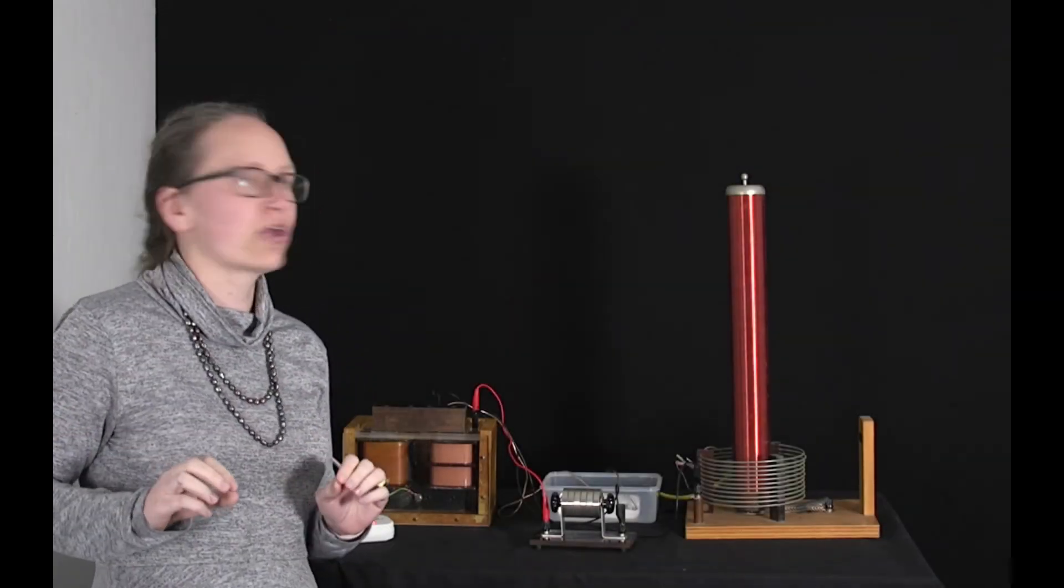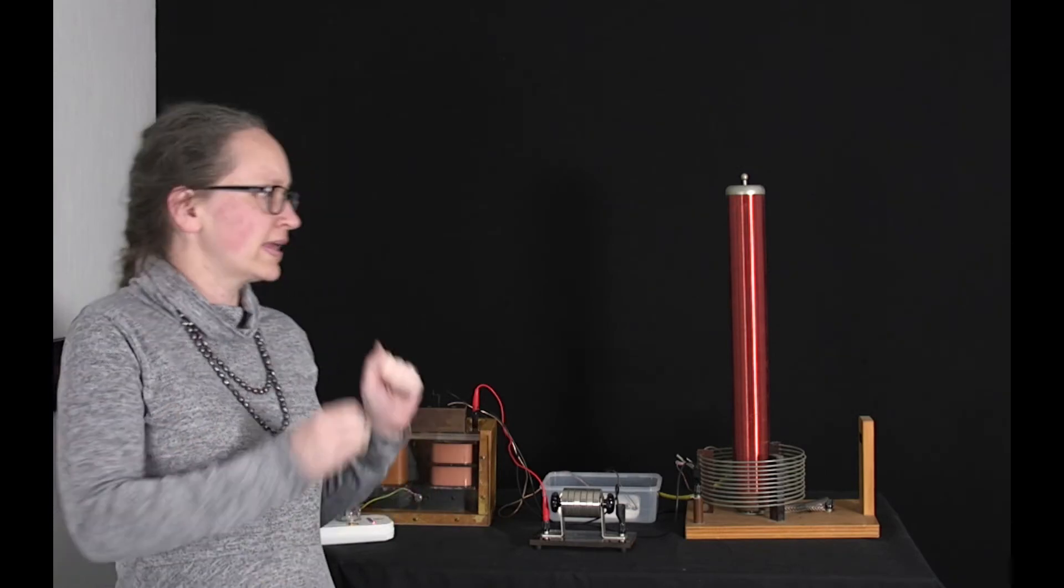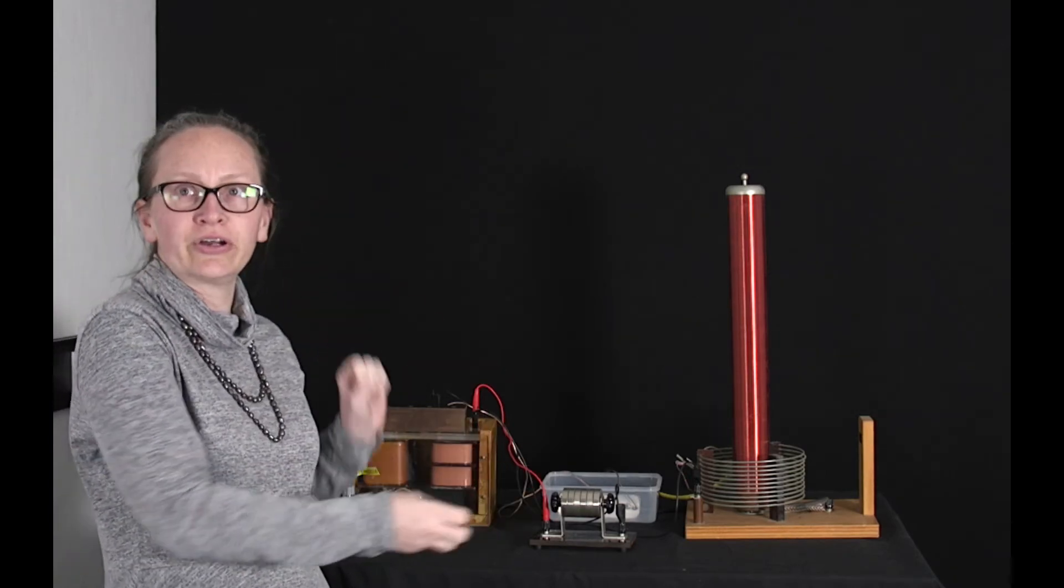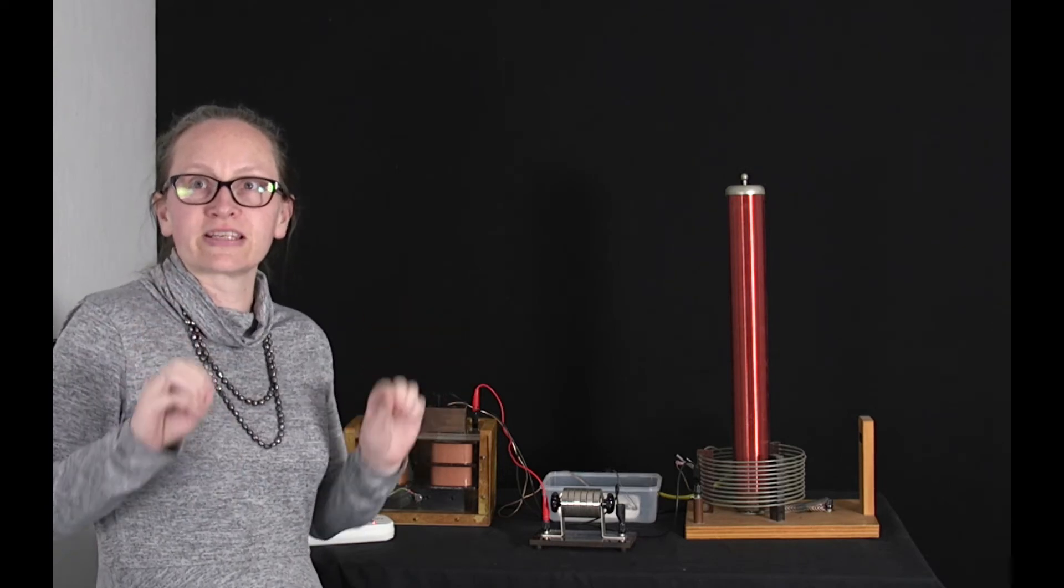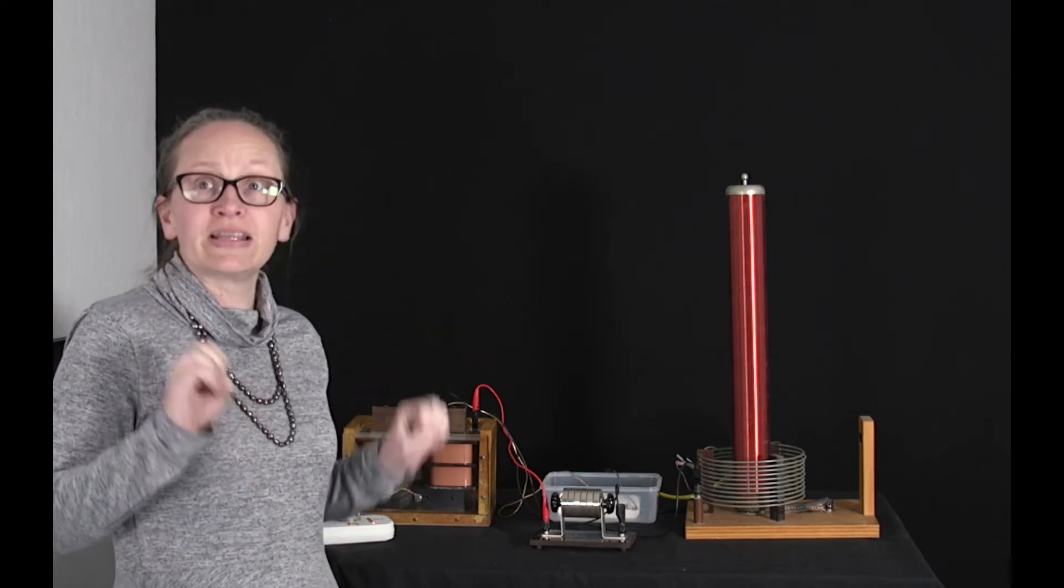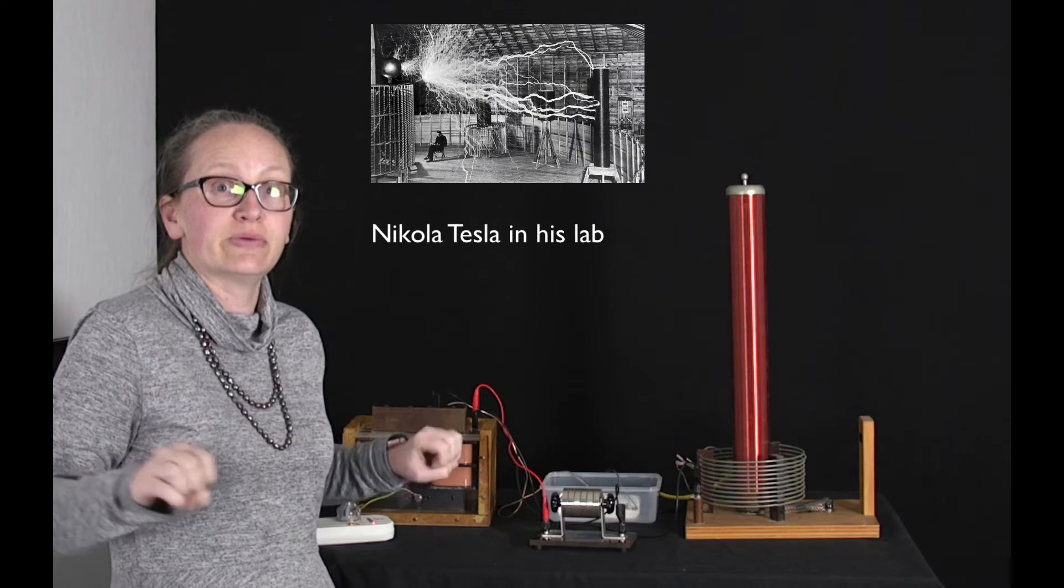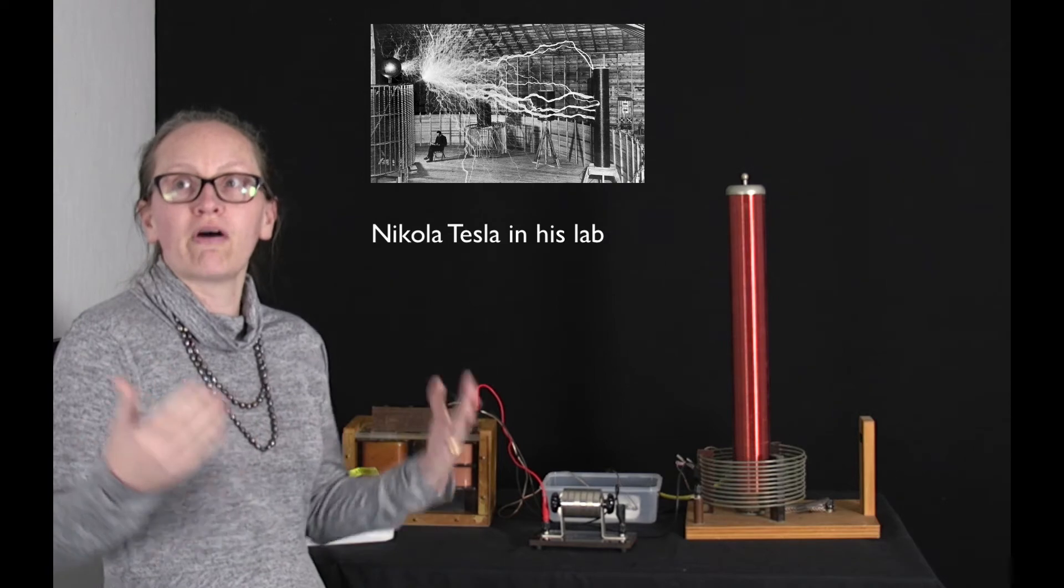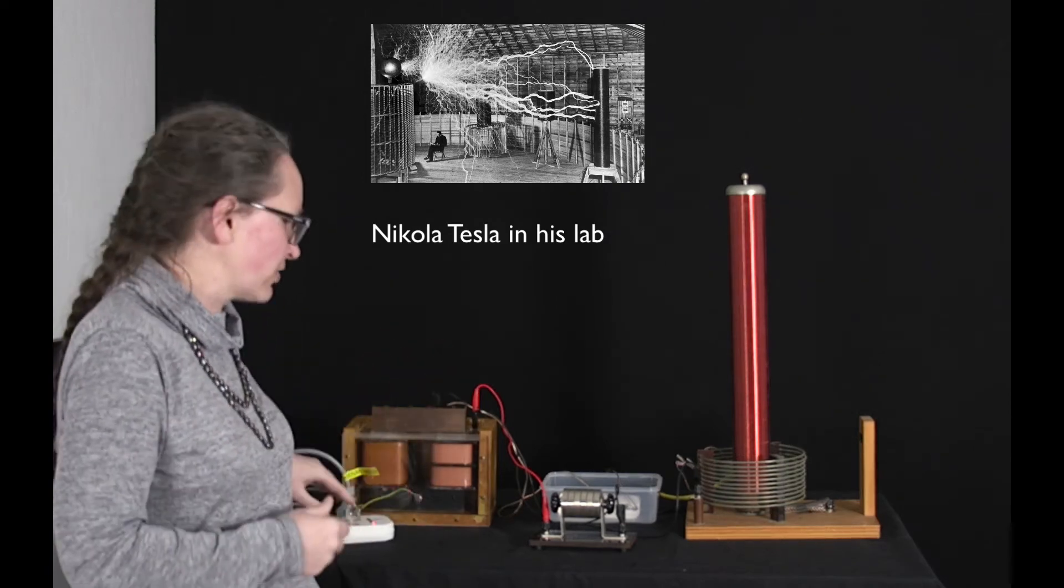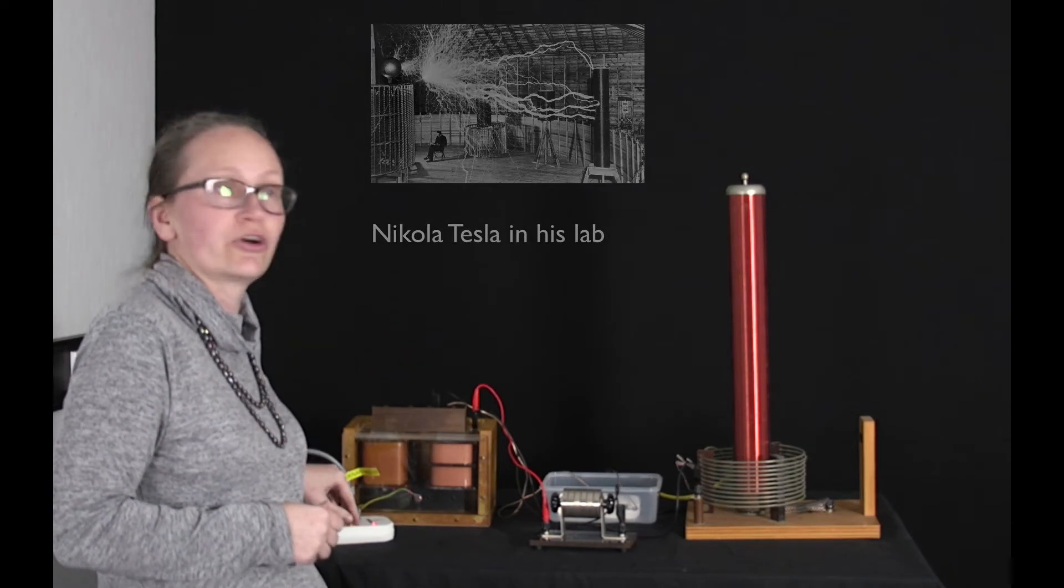So another really cool application of Faraday's law is in the Tesla coil. So the Tesla coil is an electrical transformer resonance circuit which was designed by Nikola Tesla in 1891. So he had an enormous one set up in his lab that he used to show off to visitors. So let's have a look at what happens when we turn the Tesla coil on.